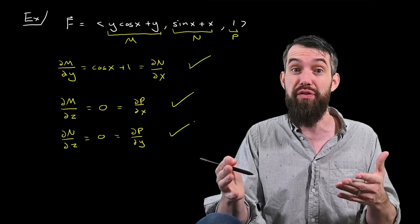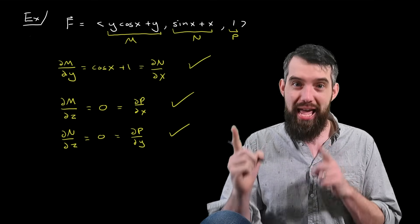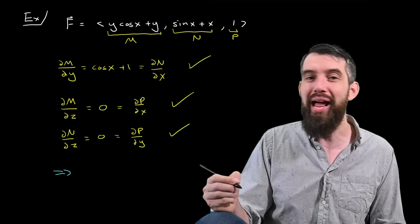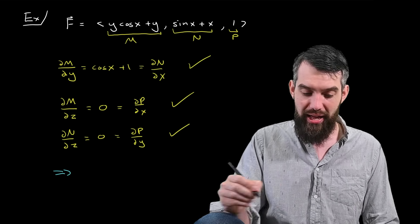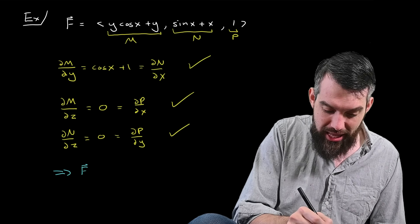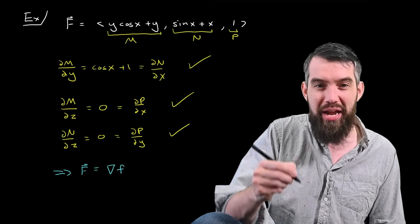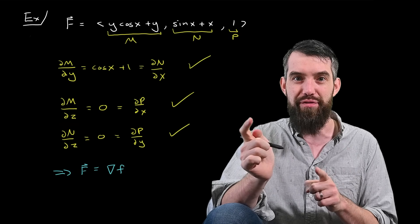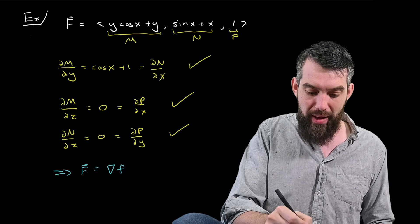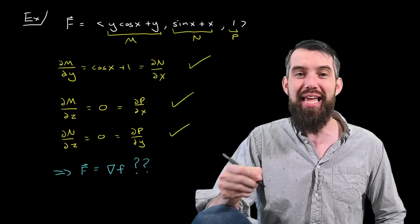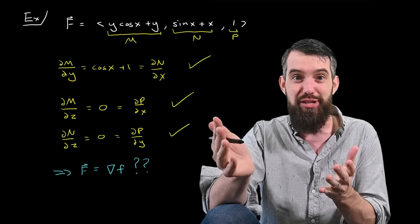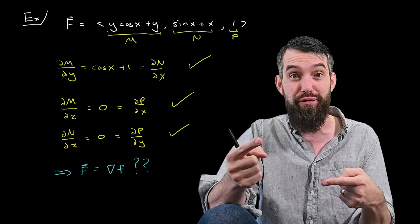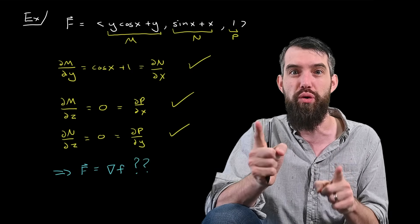This is a conservative vector field. The big implication of being conservative — the reason why I performed that check — is because this implies that the vector field F can be written as the gradient of a scalar potential function, a little f. But how? I'm saying it must be able to be written this way since I've tested it and yes, it's conservative. But how do I find that scalar potential function? That's the methodology we're going to focus on in this video.